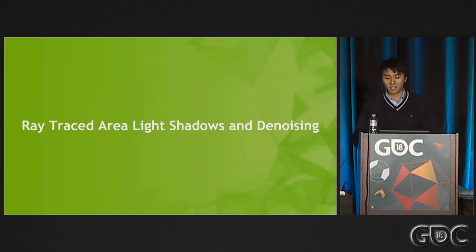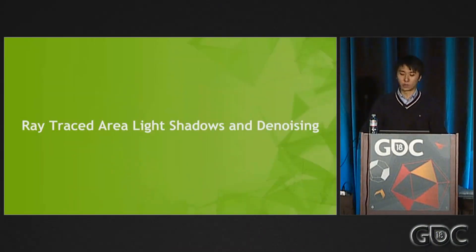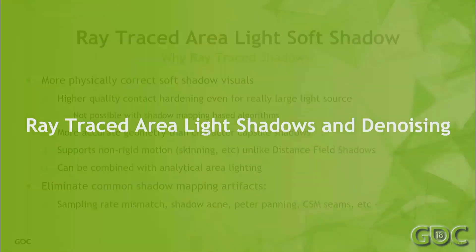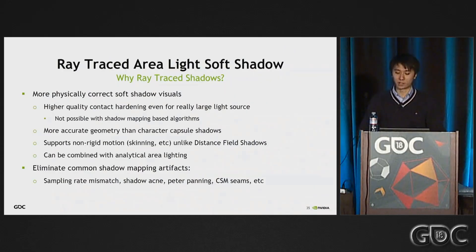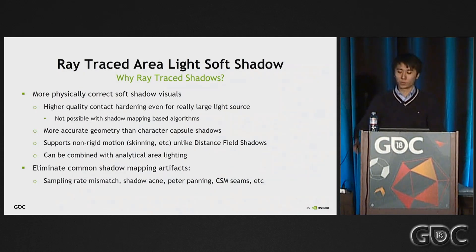Let's take a closer look at denoising ray traced shadows and ray traced shadows in general. Why do we even bother using ray tracing to render shadows? The biggest reason is that ray tracing can give you better visual quality for large area light soft shadows. It can produce physically correct, accurate penumbra even for really large area light sources, which is not possible with shadow map based techniques.